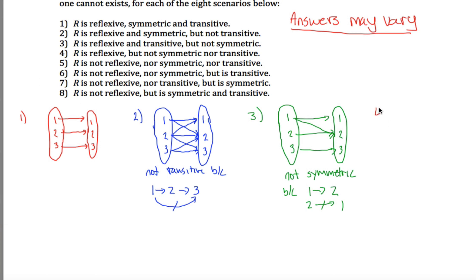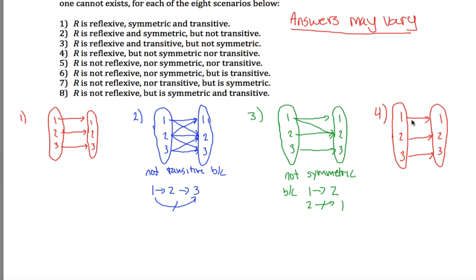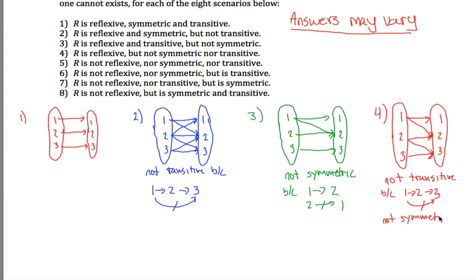Number four says reflexive but not symmetric or transitive. We start with the three self-arrows since it's reflexive. I don't want it to be symmetric, so I draw an arrow from one to two but not back from two to one. And I don't want it to be transitive, so I draw an arrow from two to three. Now it's not transitive because there's an arrow from one to two and from two to three but no arrow from one to three. And it's not symmetric because there's an arrow from one to two but no arrow from two to one.